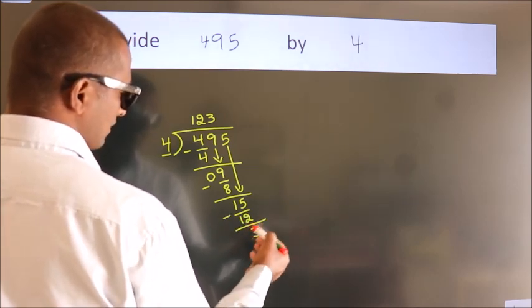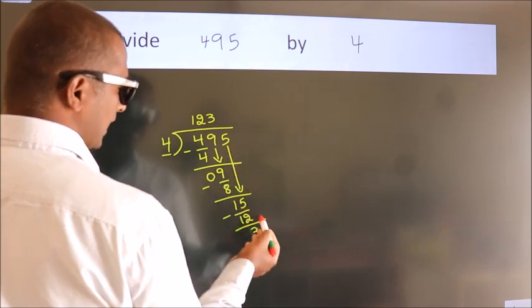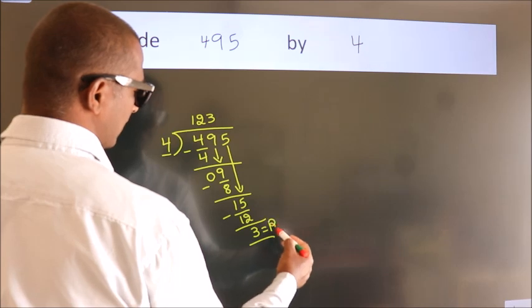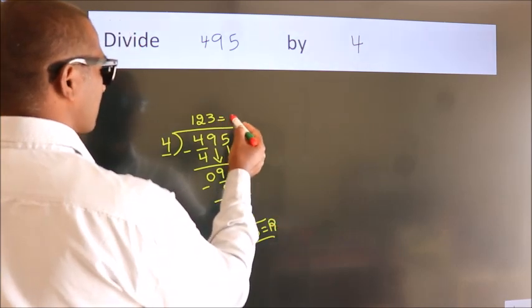After this, no more numbers to bring it down. So we stop here. This is our remainder. This is our quotient.